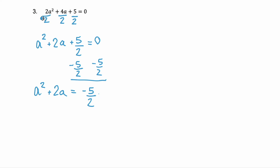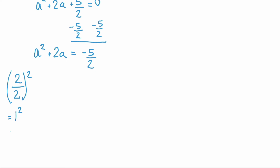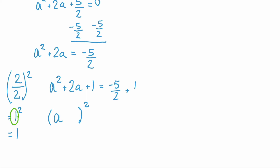Step 3: complete the square. Take the value of b, which is 2, divide it by 2, then square it. 2 divided by 2 is 1, and squaring that gives 1. So we add 1 to both sides: a squared plus 2a plus 1 equals negative 5 halves plus 1. The left-hand side is a perfect square trinomial — it's a plus 1 squared, since the second term is whatever we had before squaring, which is plus 1. On the right, negative 5 halves plus 1, which is 2 over 2, gives negative 3 halves. So we have a plus 1 squared equals negative 3 halves.